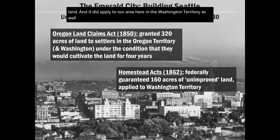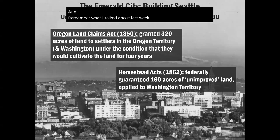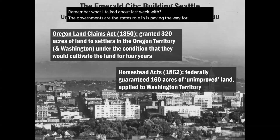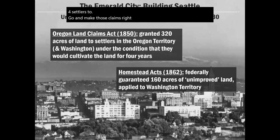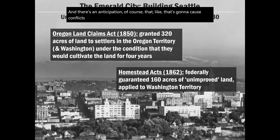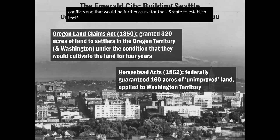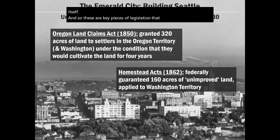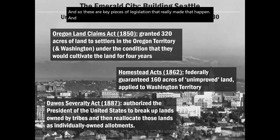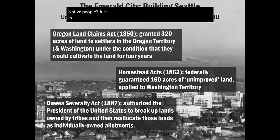Remember what I talked about last week — the government's role in paving the way for settlers to go and make those claims. It's giving them the green light to go, with the anticipation that it's going to cause conflicts, which would further cause for the U.S. state to establish itself. These are key pieces of legislation that really made that happen. One of the most consequential pieces of legislation for Native people, especially as far as land rights go, was the Dawes Severalty Act in 1887.